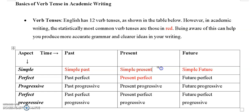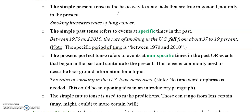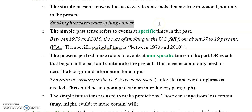Let's consider some of the functions of these common four verb tenses. The simple present tense is a basic way to state facts that are true in general — not only in the present, but also in the past or future in terms of the idea. For example: 'Smoking increases rates of lung cancer.' That was true in the past, present, or future. A great deal of academic writing includes that.